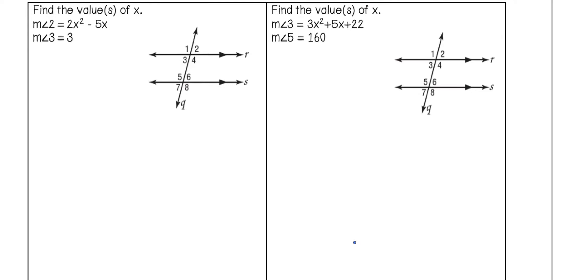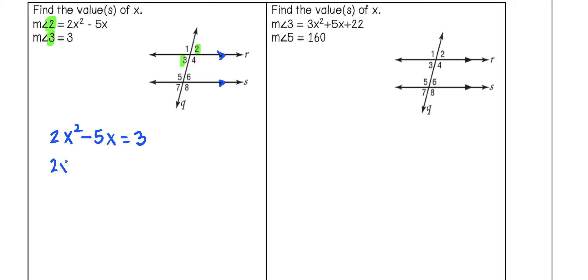Now we're going to apply this method to some geometric models. In the first example, lines R and S are parallel, with transversal Q creating eight angles. Angle 2 and angle 3 are vertical angles, so they're congruent and we set them equal: 2x squared minus 5x equals 3. Since we have a quadratic, we set this equal to 0 by subtracting 3 from each side, giving 2x squared minus 5x minus 3 equals 0.